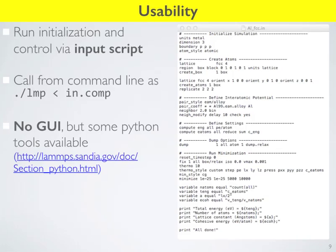If you really like GUIs, somebody has developed a Python GUI — you can go to that link and download it. I don't necessarily recommend it since there's not much to be gained, but it does exist. This is an example of the input file. In the walkthrough we'll go through exactly what all this stuff means. It looks intimidating the first time, but it's actually very friendly — it's broken into blocks similar to QuantumEspresso. All the keywords LAMP uses are very informative: units, boundary conditions, atom style, create the box — it's all pretty accessible. Once you understand one input script, you can write your own very quickly.